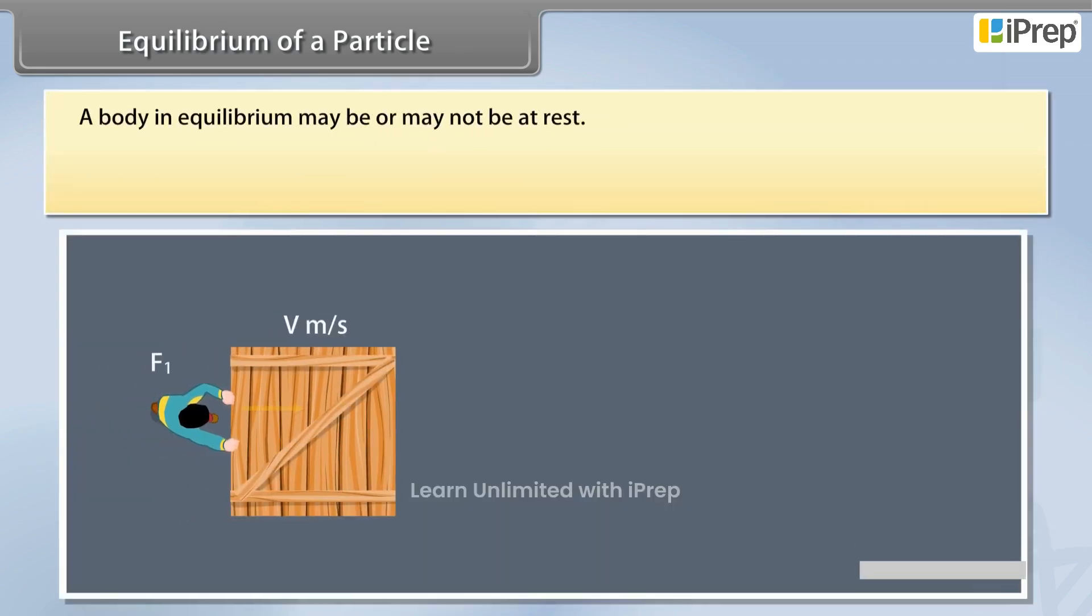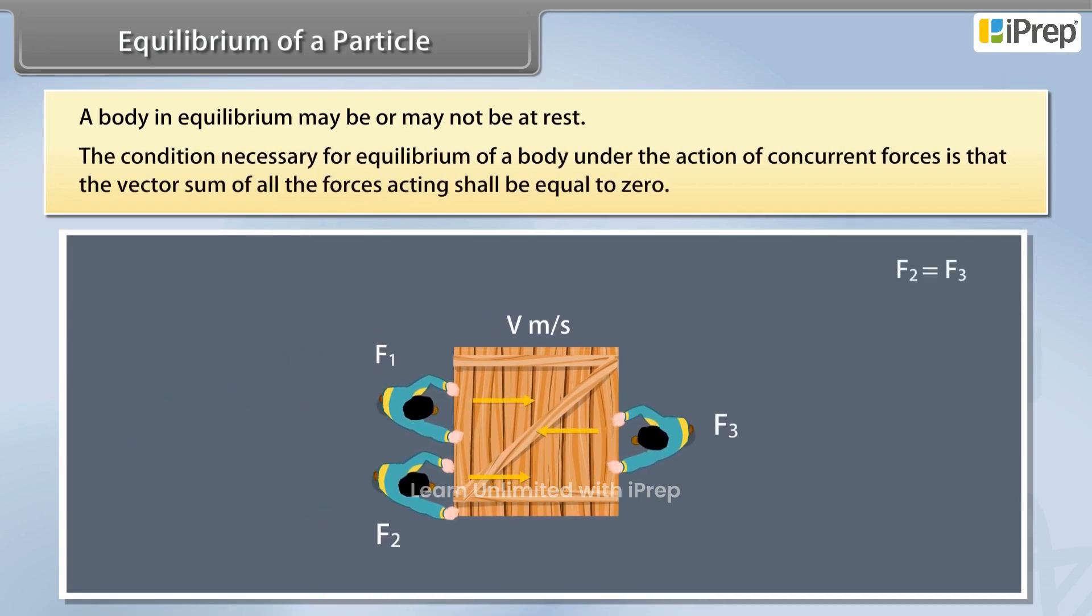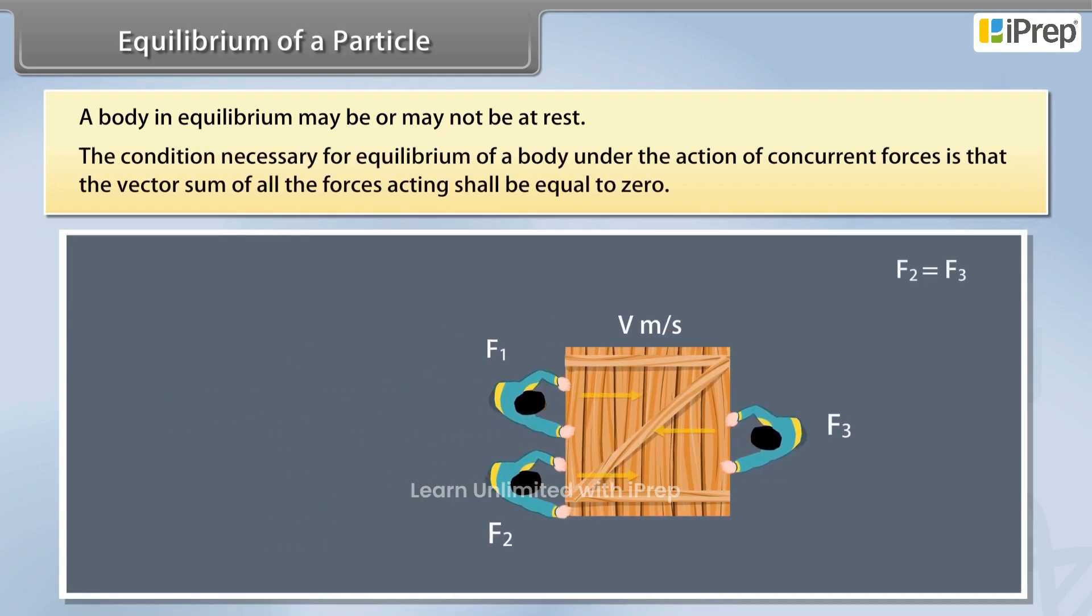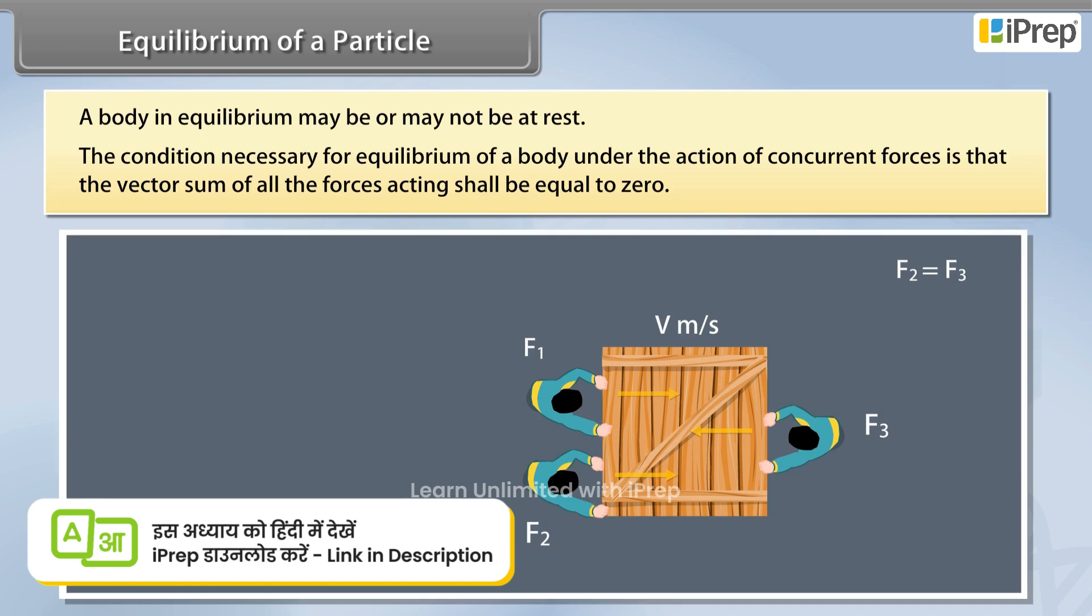A body in equilibrium may be or may not be at rest. The condition necessary for equilibrium of a body under the action of concurrent forces is that the vector sum of all the forces acting shall be equal to zero.